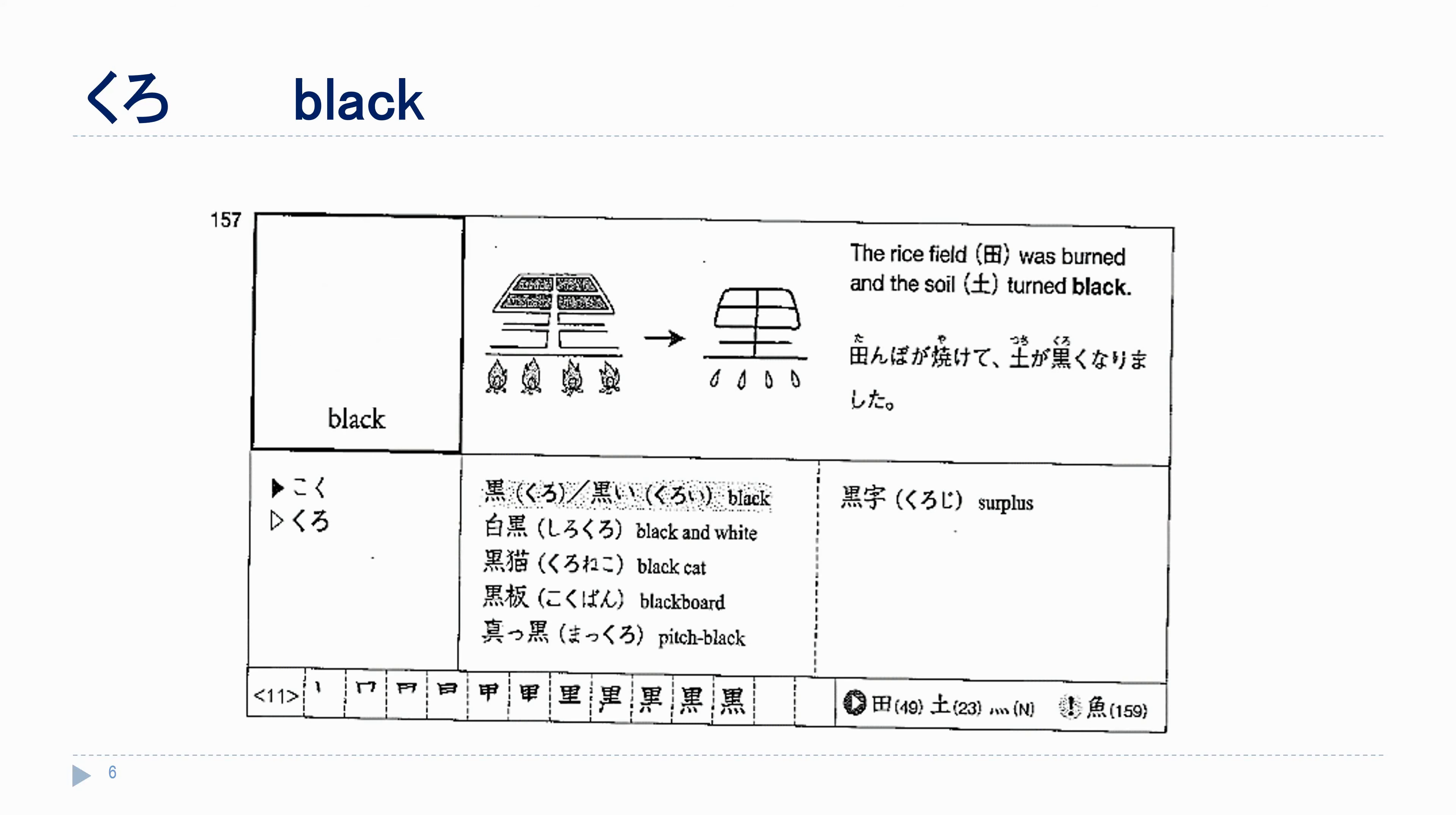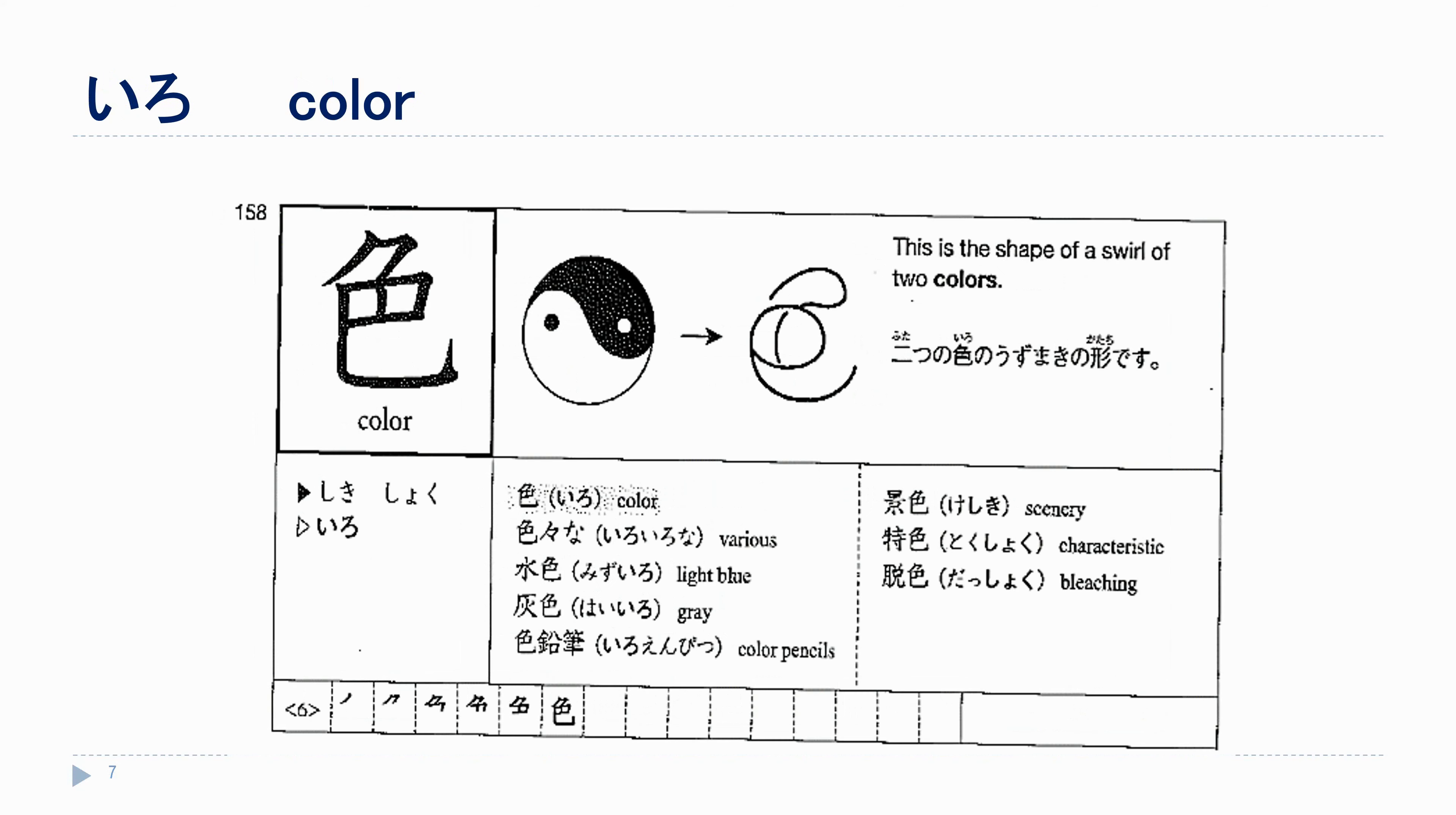Next up is the word for color in general, いろ. It's also the first part of iroiro na, although we'll have to wait till later for the second half. Watch carefully on the stroke order for this one.